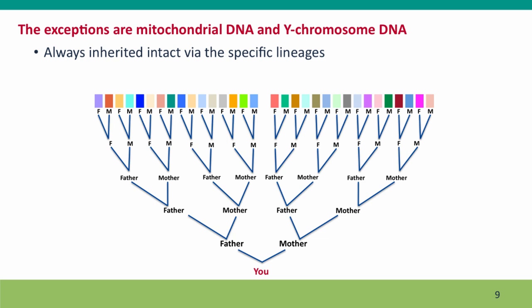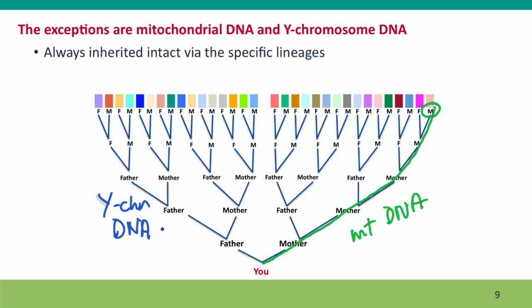There are two exceptions to the story about segments being lost: mitochondrial DNA and Y chromosome DNA, which have traditionally been used for ancestry studies. Both of these markers are inherited intact through a specific lineage. Mitochondrial DNA is passed down directly from mother to daughter without being broken up by recombination, while Y chromosome DNA is passed down intact from father to son to son to son. These markers behave very differently in inheritance and ancestry than the autosomal markers we've discussed.